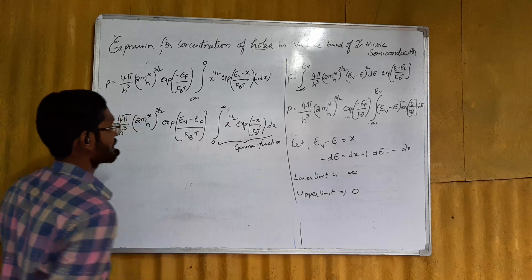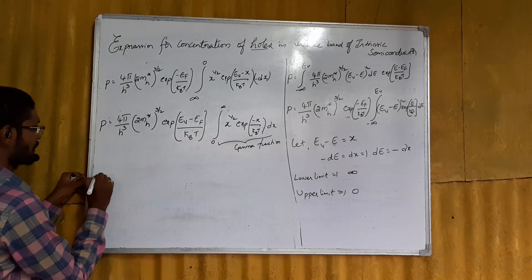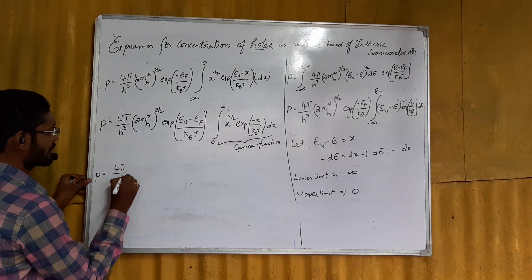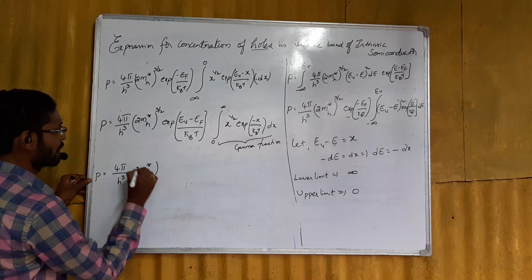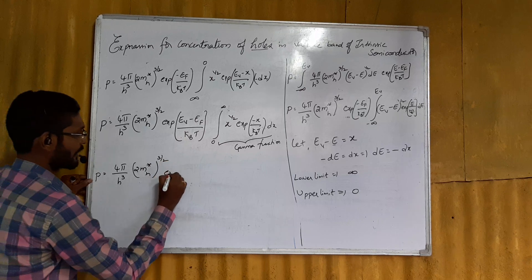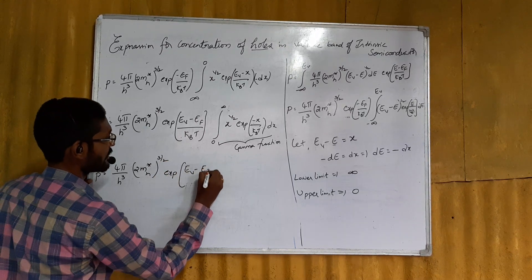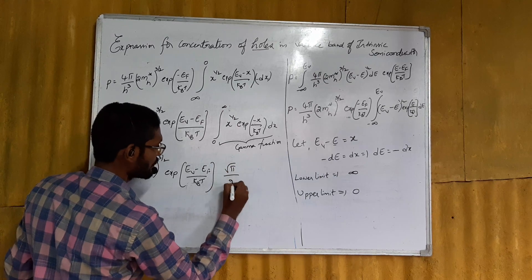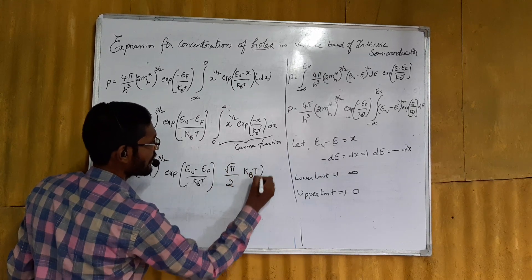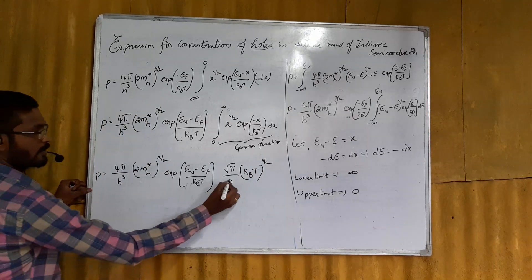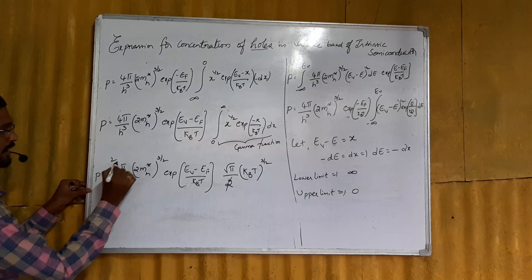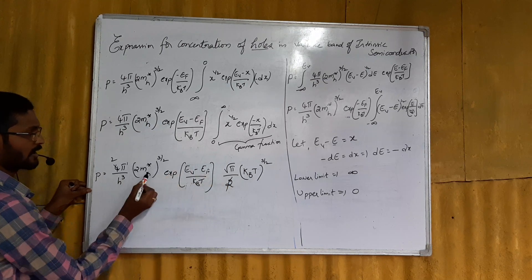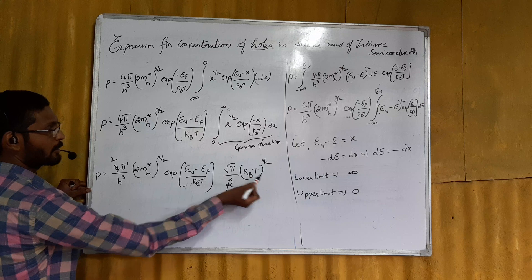The gamma function value gives: the integral from 0 to infinity of x^(1/2) × exp(-x / kBT) dx = (√π / 2) × (kBT)^(3/2). Writing this out, the factors of 2 cancel, π^1 × π^(1/2) combine to give π^(3/2), and (kBT)^(3/2) is grouped in the bracket.